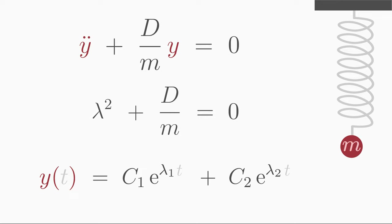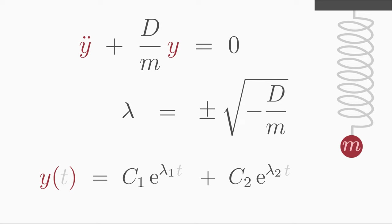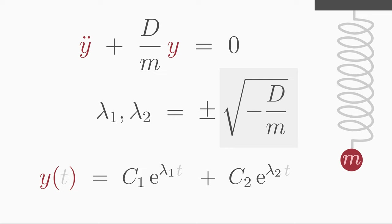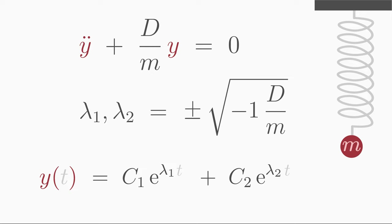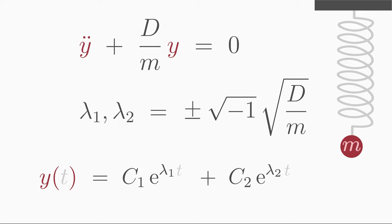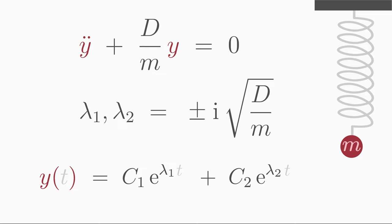For this equation we don't even need the quadratic formula. We bring d over m to the other side and take the square root, giving two solutions: a positive and a negative square root. We encounter an interesting case: the square root of a negative number, which is not a real number but an imaginary number. We split the term inside the square root into a product of minus 1 and d over m. The square root of minus 1 is the imaginary unit i. We denote the square root of d over m as omega, giving lambda equals plus or minus i times omega.